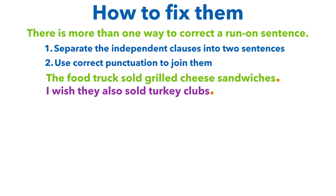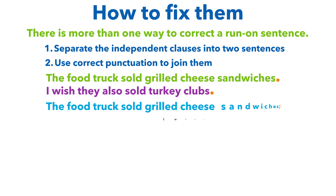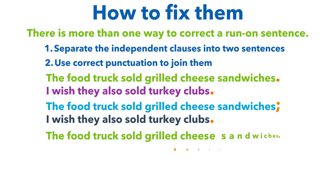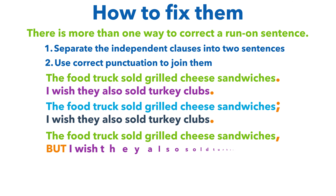The second way is to use a semicolon: 'The food truck sold grilled cheese sandwiches; I wish they also sold turkey clubs.' The third way is to use a comma plus a conjunction — words such as and, but, or or. For example: 'The food truck sold grilled cheese sandwiches, but I wish they sold turkey clubs.'